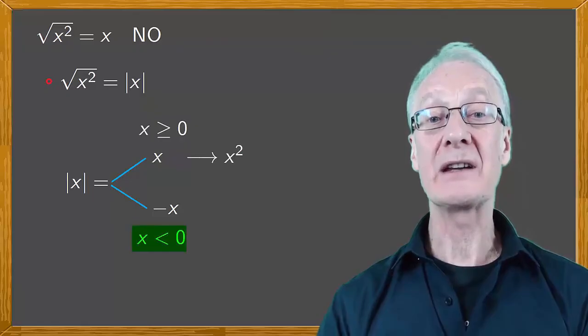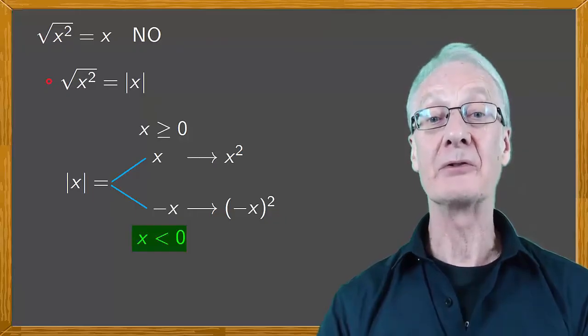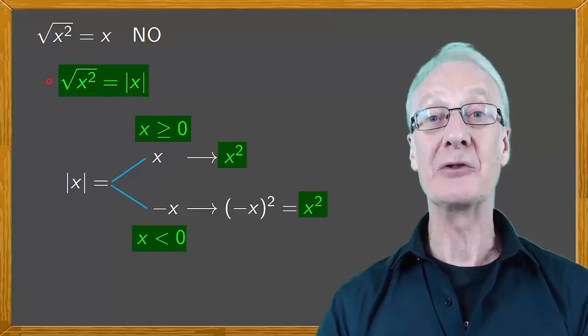In the second case, we have the square of minus x. And since a negative squared is positive, the result is again x squared. So whatever case we're dealing with, the square root of x squared is equal to the absolute value of x.